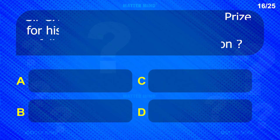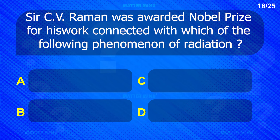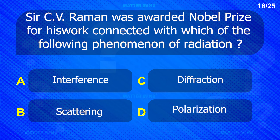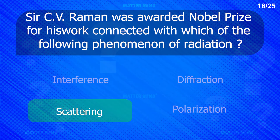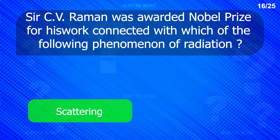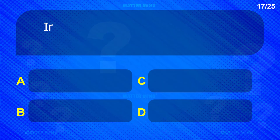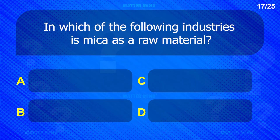Sir C.V. Raman was awarded the Nobel Prize for his work connected with which of the following? In which of the following industries is mica used as a raw material?